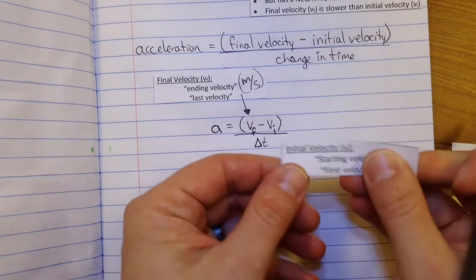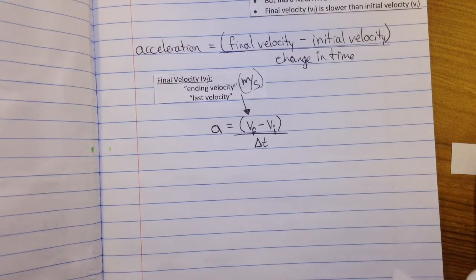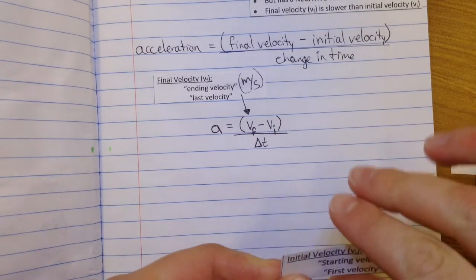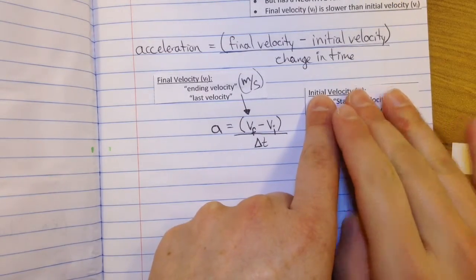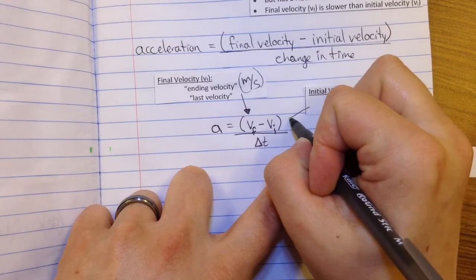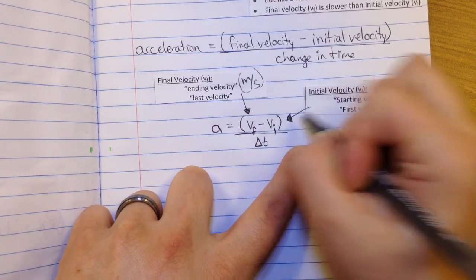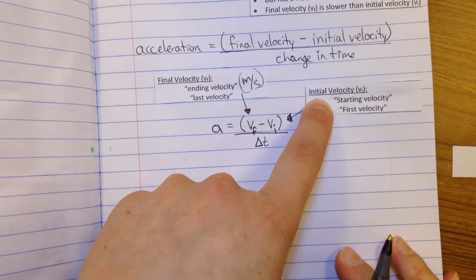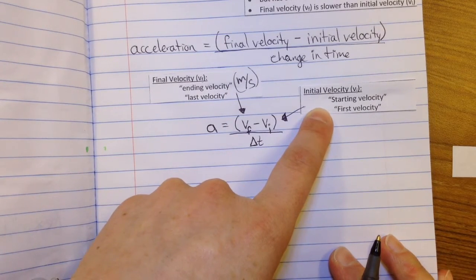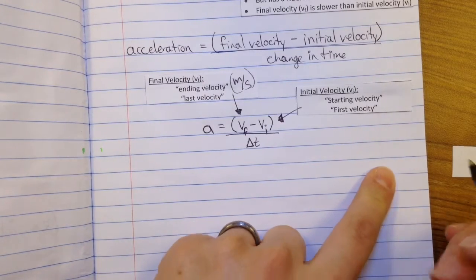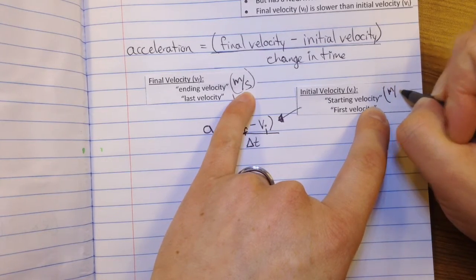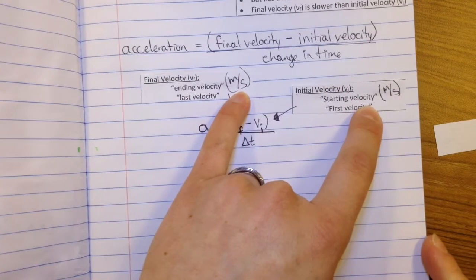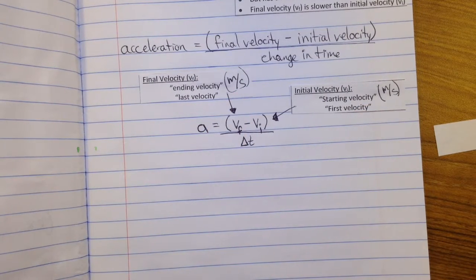Find the piece of paper that says initial velocity and glue it in to the right side. Initial velocity — that's the starting velocity or the first velocity; initial means the beginning. The units of measure for initial velocity are the same as for final velocity: meters per second. It can be kilometers per hour, but when we're dealing with acceleration we just keep it simple — meters per second.